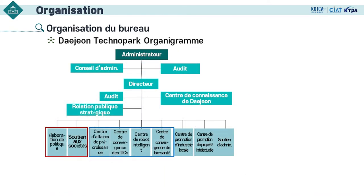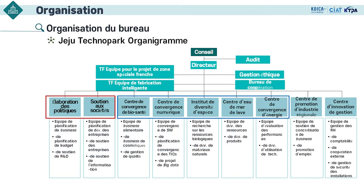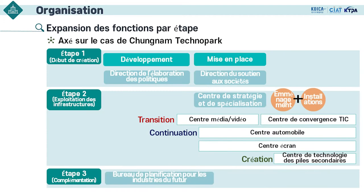Idem pour Daejeon Technoparc et Jeju Technoparc : ils ont tous les mêmes cellules fonctions, mais des cellules secteurs différentes selon la structure industrielle et les ressources de la région. En revenant à Chungnam Technoparc, il y a deux cellules qui exercent des projets désignés par le gouvernement : les cellules de l'élaboration des politiques et du soutien aux sociétés, appelées les départements de base.